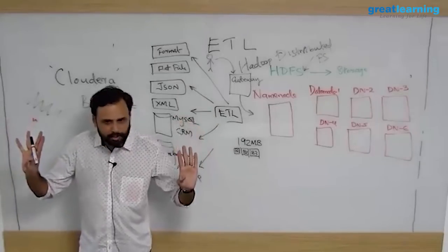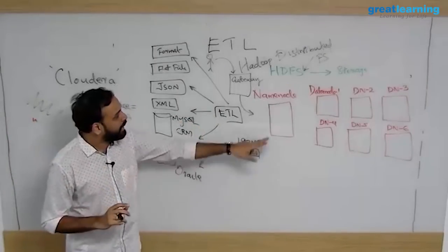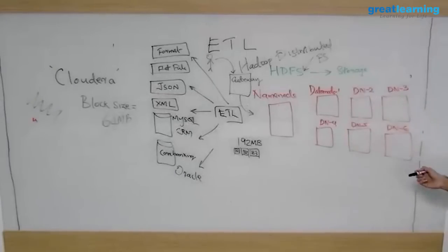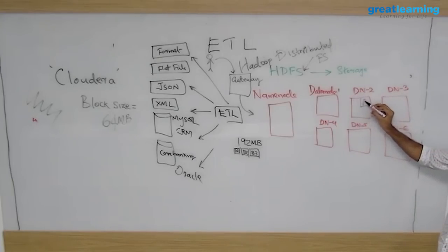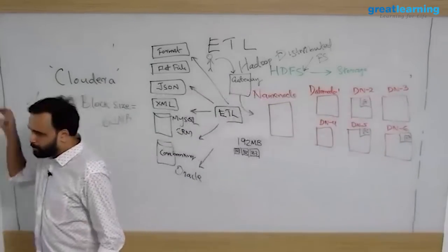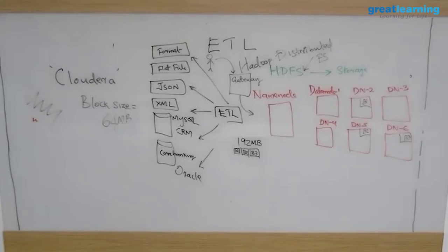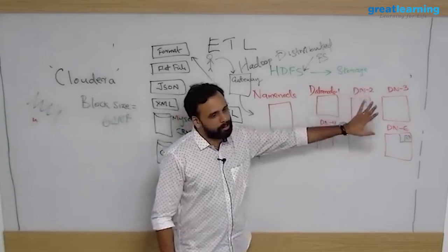You ask the name node, I have three blocks now, tell me where to store. The name node, what it does, it has communication with all the data nodes. It knows where how much space is available. It will tell you that do one thing, store the first block probably here, store the second block probably here B2, store the third block here B3. Most of the cases the name node will give you different different machines. It will never allow you to store everything in one machine. So you divide and distribute. That is how you are storing the data.